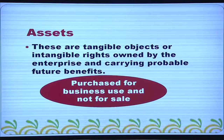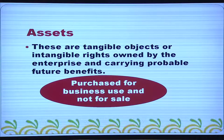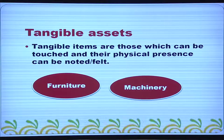Assets are things having certain value inside the business. These are tangible objects or intangible rights owned by the enterprise and carrying probable future benefits. Assets are purchased for business use and not for sale. We have tangible assets and intangible assets, fixed assets and current assets. Tangible items are those which can be touched and their physical presence can be noted or felt — land, building, plant, machinery, etc. are tangible assets.